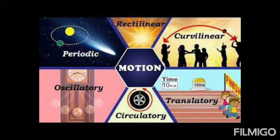Next is oscillatory motion, also called vibratory motion. When a body moves to and fro about a fixed point, it is said to be in oscillatory motion. Like the pendulum on a clock — the pendulum goes to the left, then right, back and forth. We call this oscillatory motion or vibratory motion.